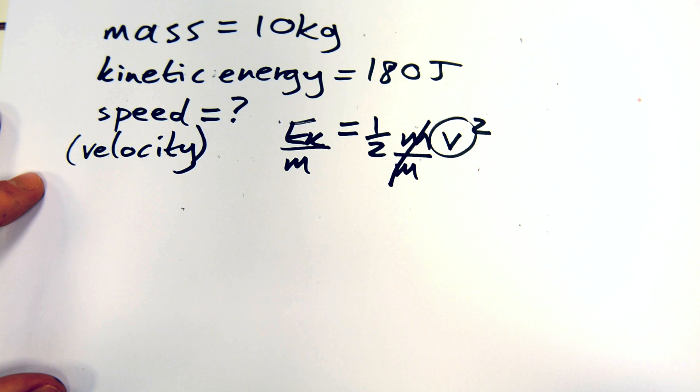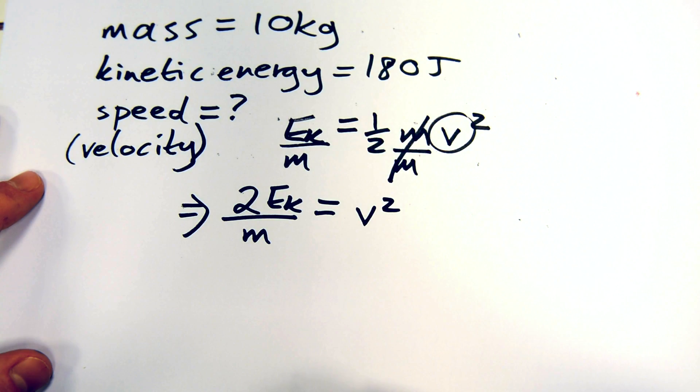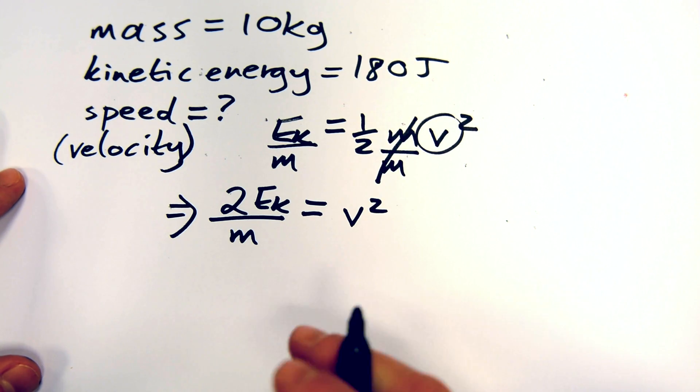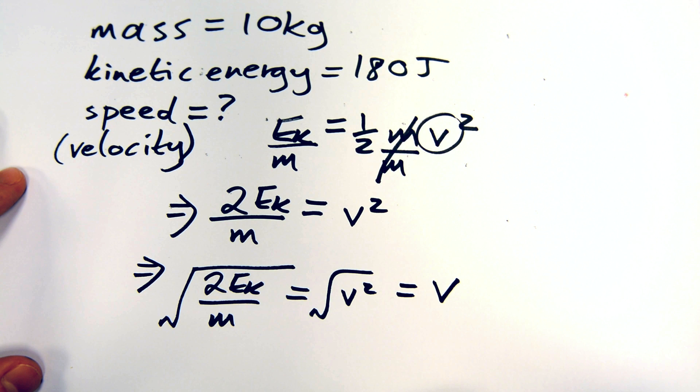Then divide the whole equation by a half, which is the same as multiplying by 2. Finally, to unsquare the v, we square root both sides, leaving us with v equals the square root of 2Ek divided by m, or over m.